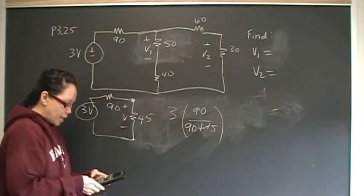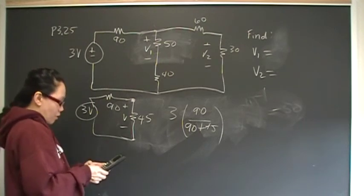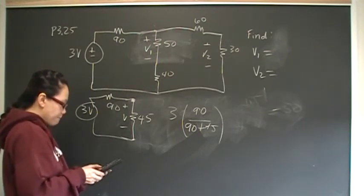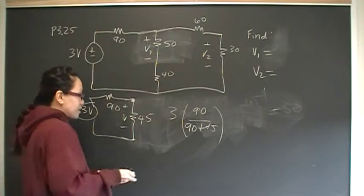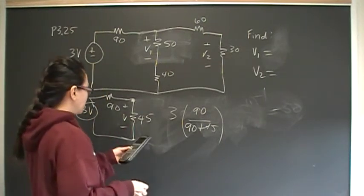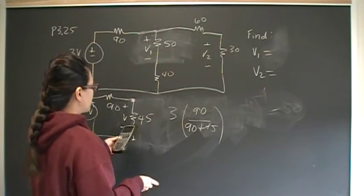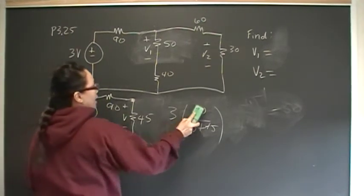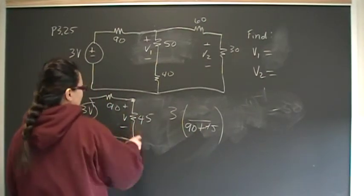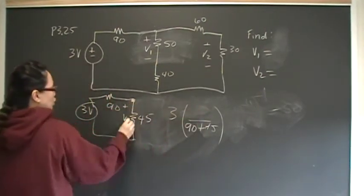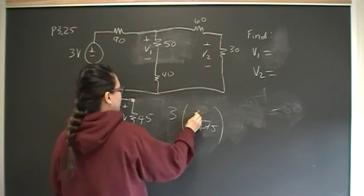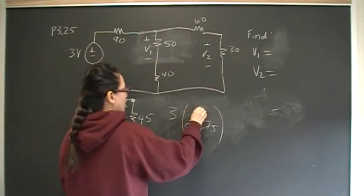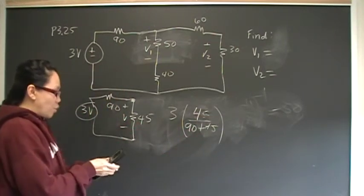And so we got 3 times 90 divided by 90 plus 45. And that's going to give us 2. Oops, not 90. That's that voltage drop, which is fine. And that gives me 2, which means this one must be 1, but the voltage drop that I want is that one. And that's going to be 45, and that should give you 1.